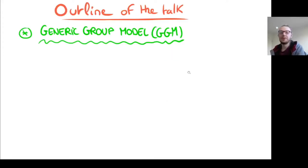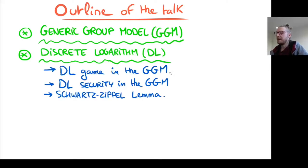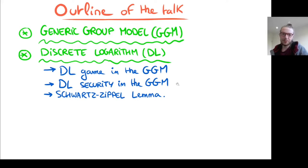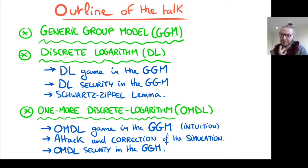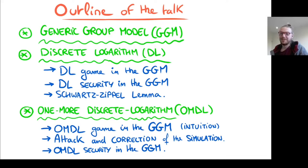I will first introduce the generic group model. After that, I will talk about the discrete logarithm assumption, how we can write the discrete logarithm game in the generic group model and simulate it without having any secrets. This will lead to some security property of the discrete log in the generic group model, using the principal lemma to prove its security. After that, I will introduce the one more discrete logarithm, which is a more complex assumption. We will see how to simulate the one more discrete log game in the generic group model without a secret — but the intuitive way doesn't work, which is why the previous proofs were flawed. We will see an attack, and then a correction for the simulation, and how we can prove its security from this new correction.